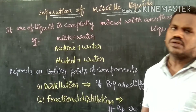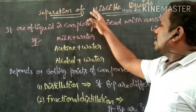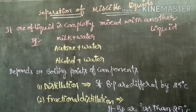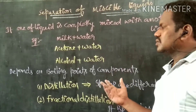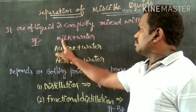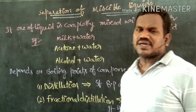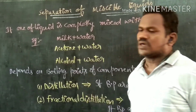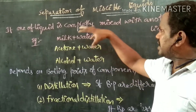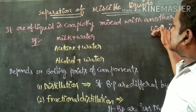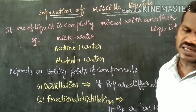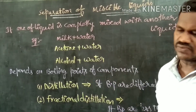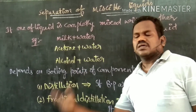Now in this module we are going to discuss how miscible liquids are separated. Examples of miscible liquids: milk and water — we can't separate them simply by using any method; acetone and water; alcohol and water. One liquid is completely mixed with another liquid — such liquids are called miscible liquids. If one liquid does not mix with another, that is called immiscible liquids.